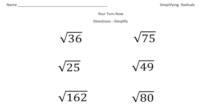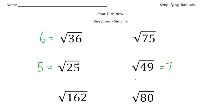Alright, welcome back. Let's go over these practice problems. Three of these were much easier to simplify than the others. The square root of 36 should have been just 6. The square root of 25 should have been 5. And the square root of 49 was 7, because 7 times 7 is 49. So those three are quick and easy, but the irrational ones are a little more complex.